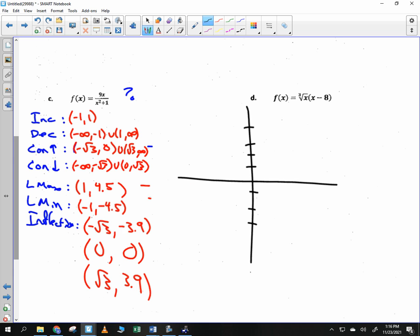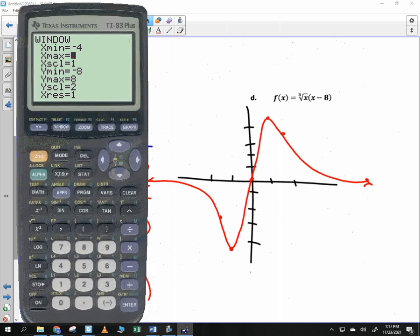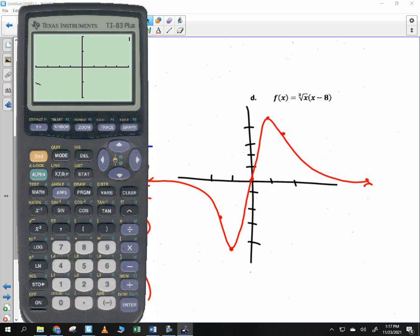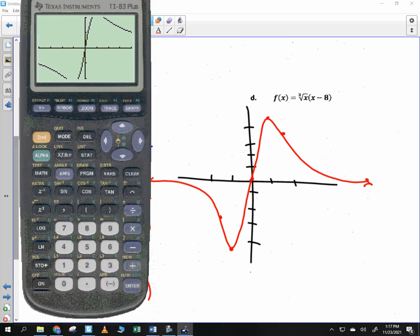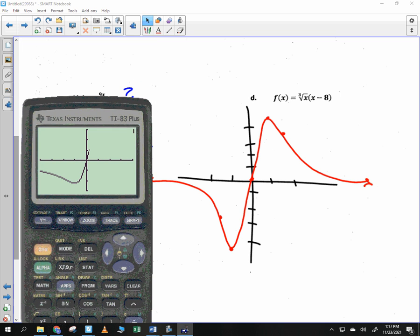Before I sketch that graph, I'm going to quick just try to put it here and see what I get. 1, 2, 3, 4. 1, 2, 3, 4. 1, 2. 1, 2. I'm going to plot these points. 1 and 4.5, negative 1 and negative 4.5, negative root of 3 and negative 3.9, root of 3 and positive 3.9, and 0, 0. Looks to me that the graph is going to look like local min, local max. I'm going for that. And I'm going to check to see what I got. Not too bad. That's what we uncovered.